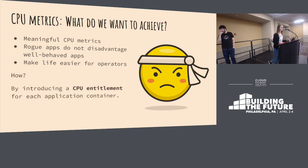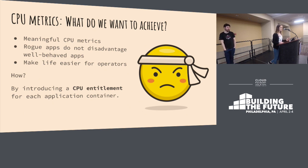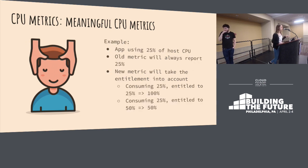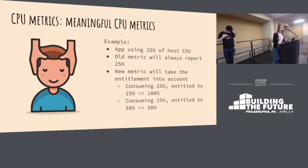The thing we did is introduce a CPU entitlement for each container — this is the CPU you should normally be getting. We implemented this already and there is a new metric in Cloud Foundry, exposed through a plugin called the CPU entitlement plugin. We didn't change the old metric; we introduced a new one. So if an application is using 25% of host CPU, the old approach always shows 25%. But with the new plugin, if you're entitled to 25% and consuming 25%, you'll see 100%. If you're consuming 25% but entitled to 50%, you'll see 50%.